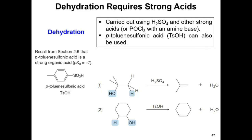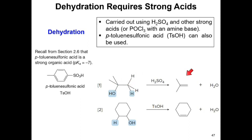Dehydration reactions can be carried out using strong acids such as sulfuric acid and p-toluenesulfonic acid (TsOH), a strong organic acid with a pKa of negative 7, essentially similar in strength to hydrochloric acid. Sulfuric acid can remove a water molecule from an alcohol to generate an alkene, and TsOH can likewise convert an alcohol into an alkene.